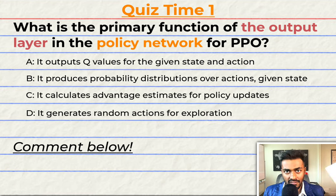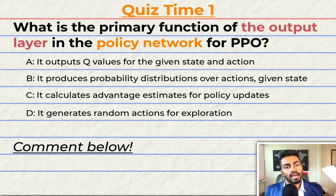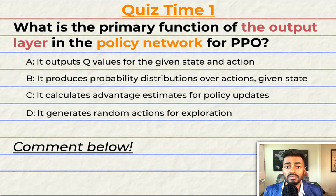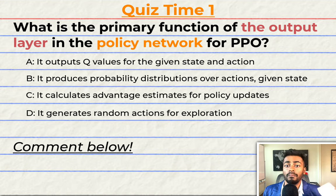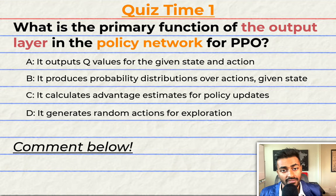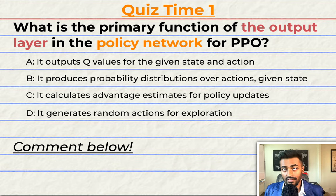Quiz time! Have you been paying attention? What is the primary function of the output layer in the policy network of the PPO algorithm? A: it outputs Q values for the given state and action. B: it produces a probability distribution over possible actions given the input state. C: it calculates the advantage estimates for policy updates. Or D: it generates random actions for exploration. Comment your answer below and let's have a discussion. If you love learning, please consider hitting that like button.